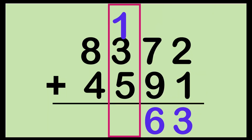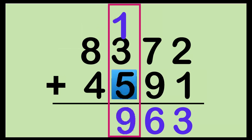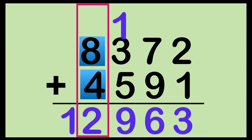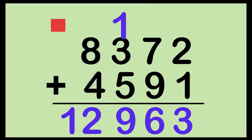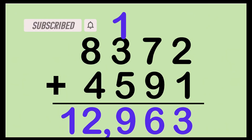Let's proceed now to the hundred's place. 1 plus 3 — put 3 on your mind: 3, 4. We have 4 here. Then 4 plus 5 — put 5 on your mind, big number: 5, 6, 7, 8, 9. We have 9 here. Let's proceed now to the thousand's place. So the sum of 8,372 and 4,591 is 12,963.